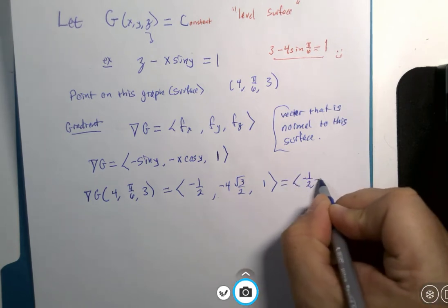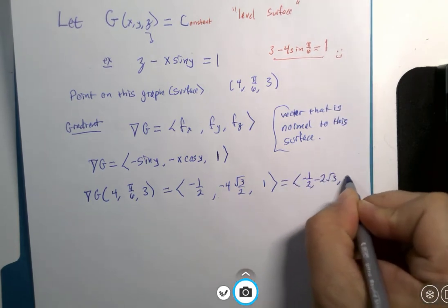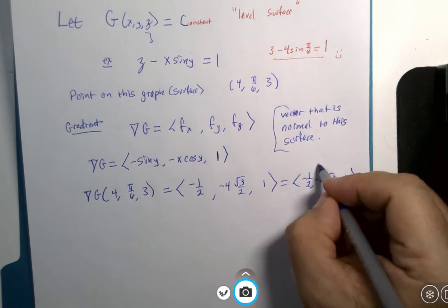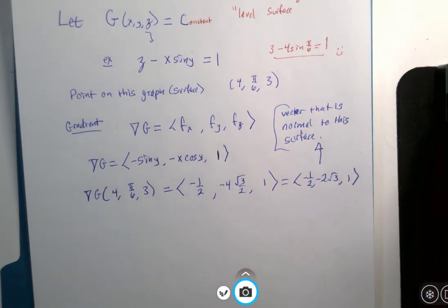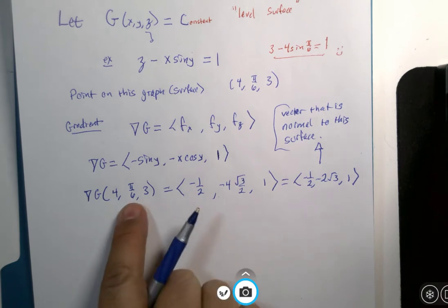negative 1/2, negative 2√3, 1. And that vector is normal to the surface at this point.